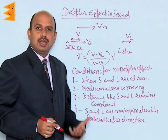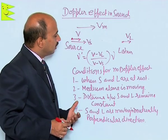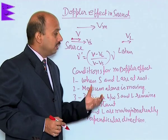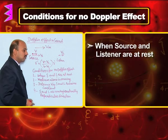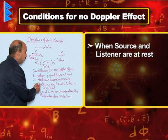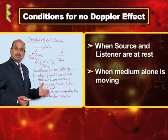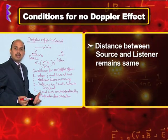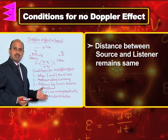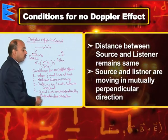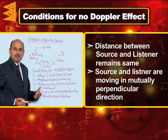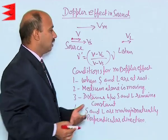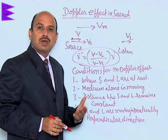Whenever there is relative motion between source and listener, there is a change in the apparent frequency heard by the listener. However, there are certain cases where there is no Doppler effect: first, when both source and listener are at rest; second, when the medium alone is moving and source and listener are at rest; third, when the distance between source and listener remains constant; and fourth, when source and listener are moving in mutually perpendicular directions. In all other cases, you can use these formulas to find the variation in frequency.